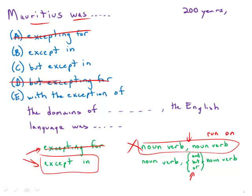And then later on in the sentence, we have the English language was. That's also a bona fide noun and a verb. So we have two independent clauses, and we need some kind of conjunction joining them.